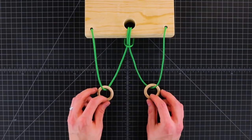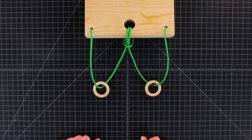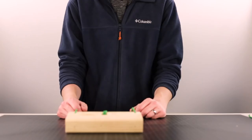The goal of this puzzle is to get both rings on the same side or the same paracord loop without detaching anything from our board. Let's get started.